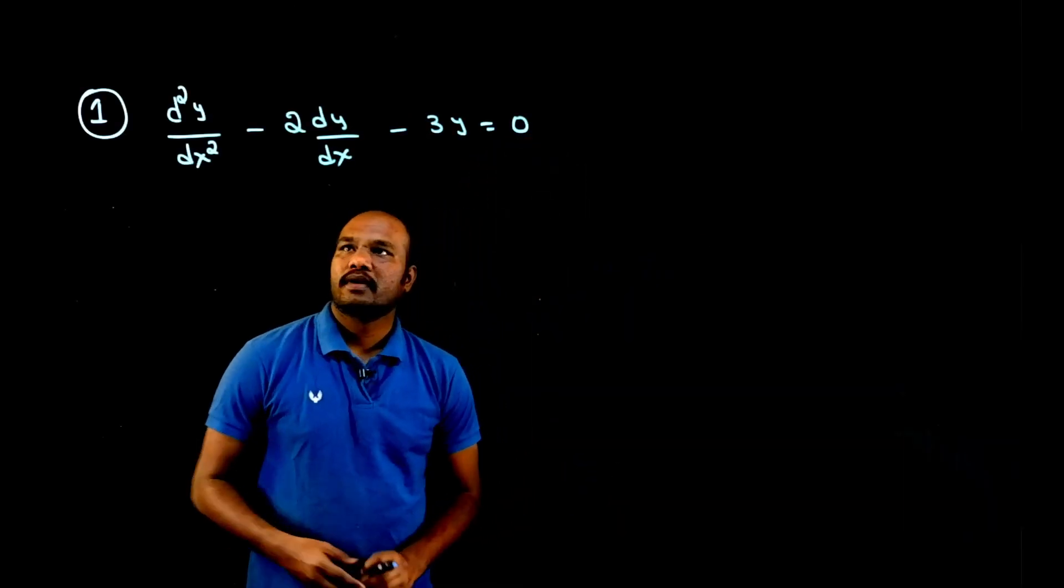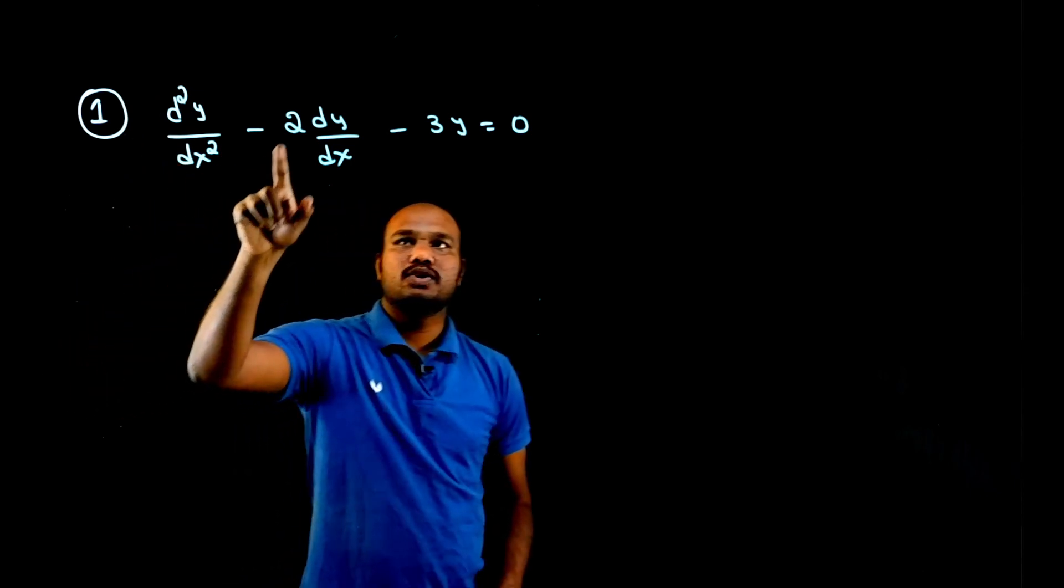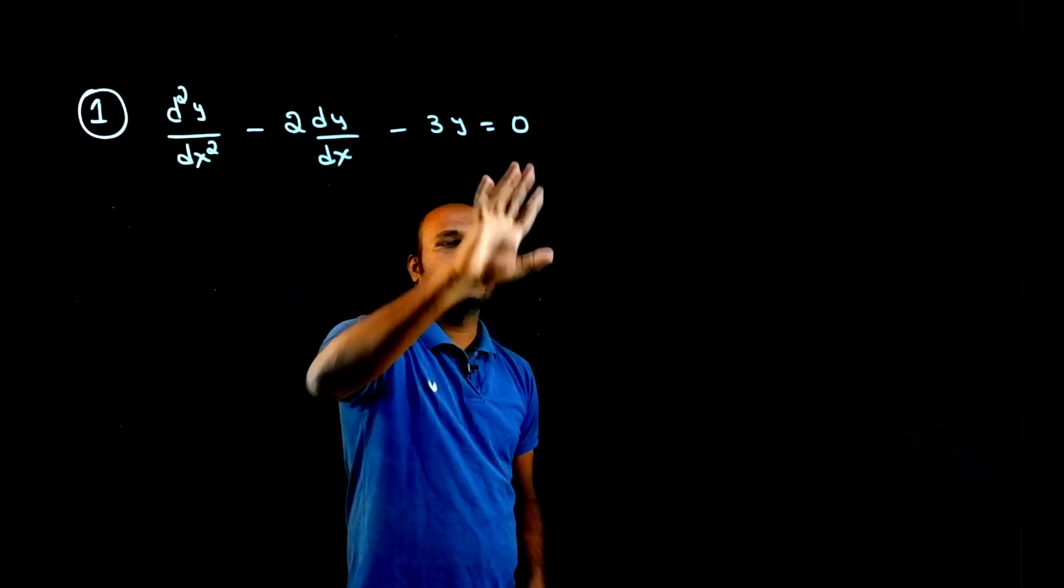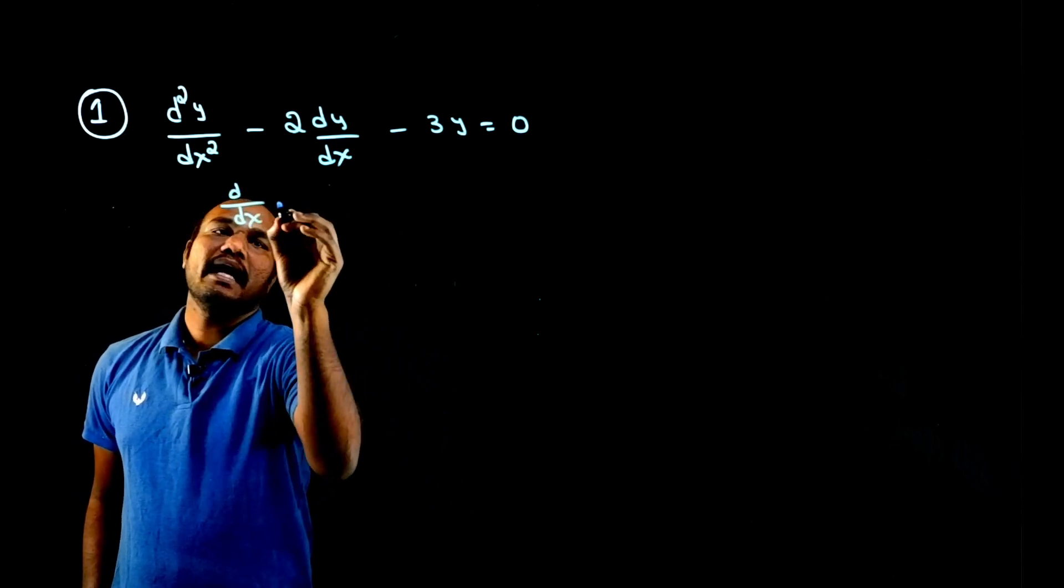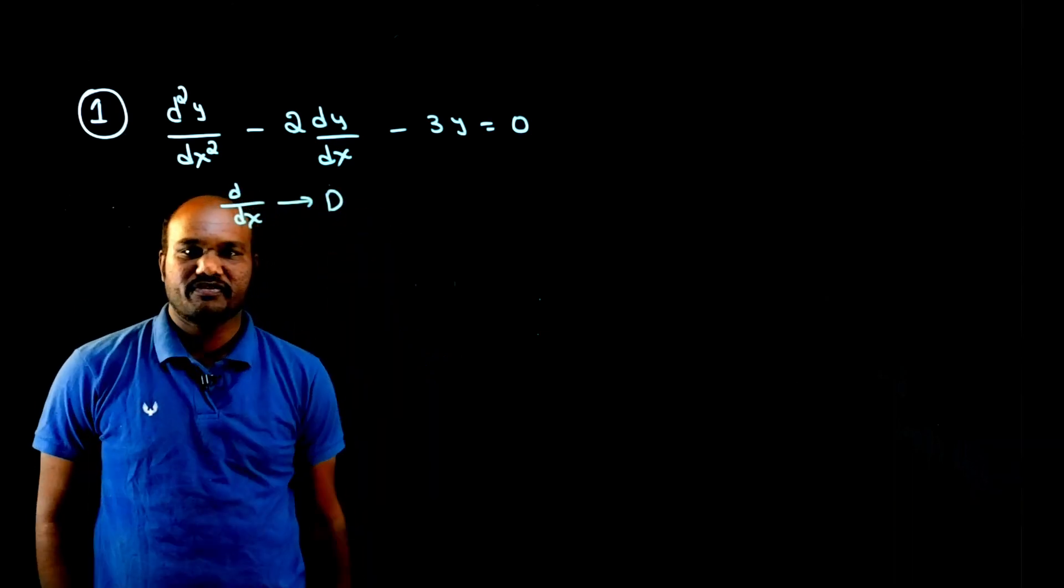If you are not subscribed to our channel, please do subscribe for more videos like this one. Let's see the question. What is given: d square y by dx square minus 2 into dy by dx minus 3y equal to 0. The first step is always to take d by dx as capital D.